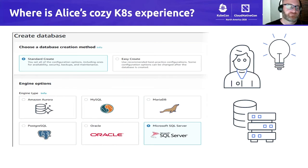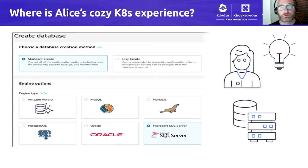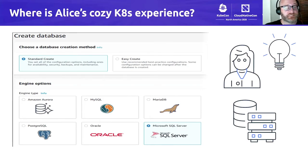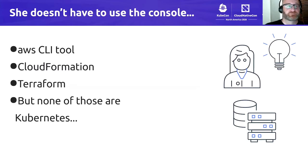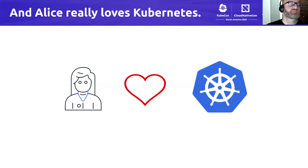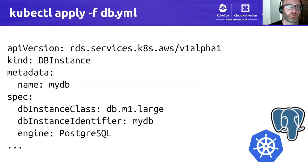She doesn't have to use the web console, of course. She could use the AWS CLI tool, or a tool like CloudFormation or Terraform. But at the end of the day, none of those things are Kubernetes. What if she could just kubectl apply a Kubernetes manifest with some YAML that describes her RDS database instance, and have a Kubernetes controller manage the lifecycle of her RDS database instance for her? Well, this is pretty much what ACK is — allowing Kubernetes users to continue using the Kubernetes API to manage AWS infrastructure resources, things like RDS databases, S3 buckets, and SNS topics.